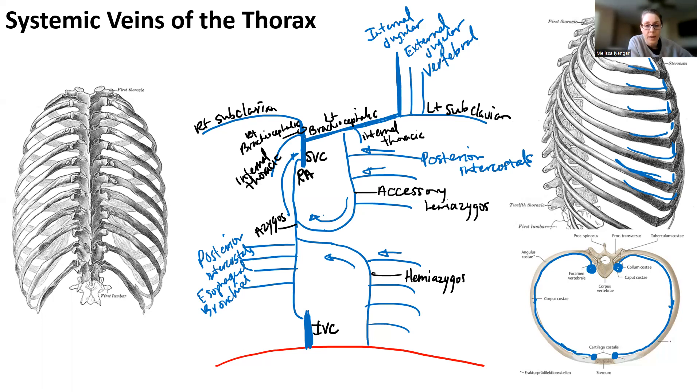All right, so that's the vein system of the thorax. Let's do the arm next.